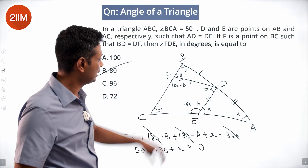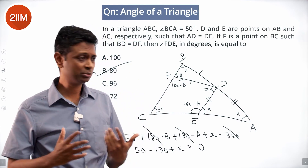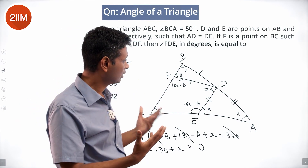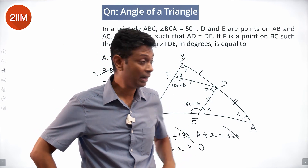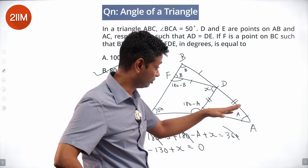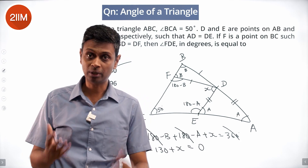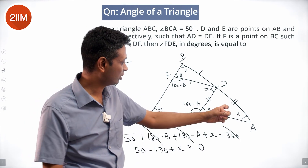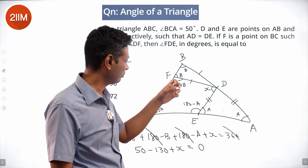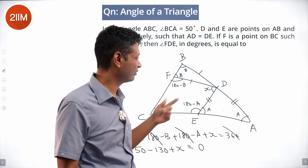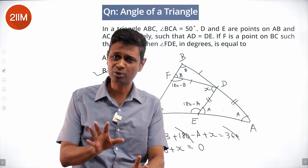I hadn't seen this diagram before. After you draw it carefully — isosceles here, isosceles here, angles A and A, B and B — and recognize 180−B and 180−A, and that A + B = 130 degrees since angle C = 50, this becomes straightforward.